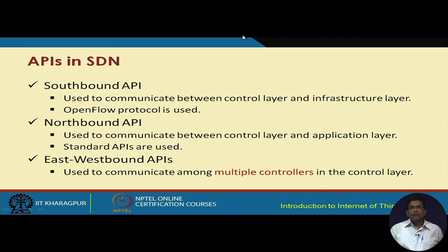The northbound API is used to communicate between the control layer and the application layer. All existing standard APIs can still be used in the northbound API. There is also another kind of API called the east-westbound API, and this concept comes into picture when we are talking about not a single controller but multiple controllers in the control layer.